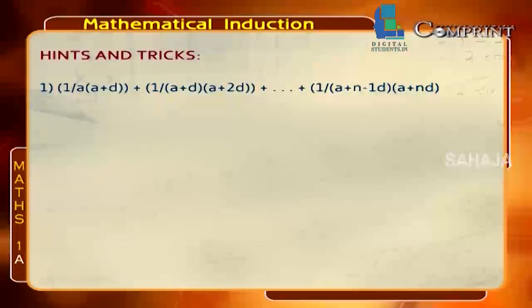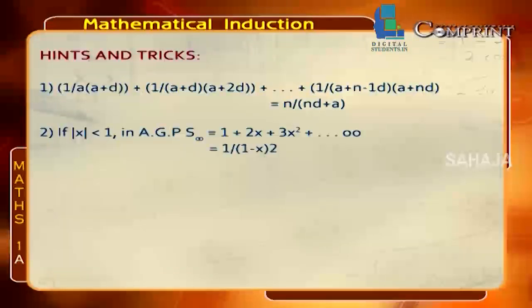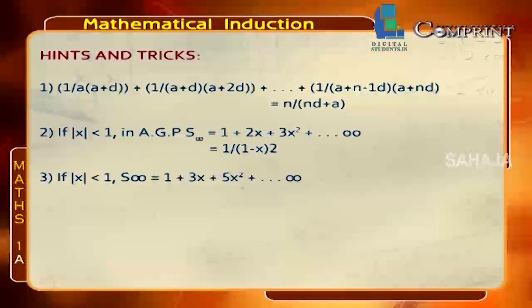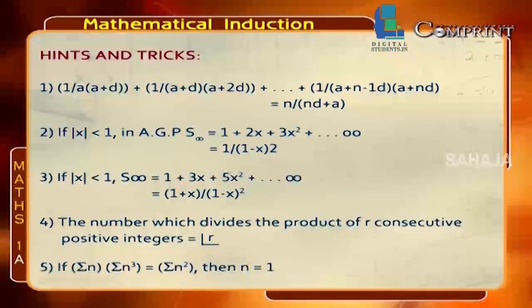Hints and tricks: 1/(a(a+d)) + 1/((a+d)(a+2d)) + … + 1/((a+(n−1)d)(a+nd)) = n/(a(nd+a)). If |x| < 1, in AGP: S∞ = 1 + 2x + 3x² + … = 1/(1−x)². Also, S∞ = 1 + 3x + 5x² + … = (1+x)/(1−x)². The number that divides the product of r consecutive positive integers equals r!. Also, (Sigma n)(Sigma n³) = (Sigma n²)².